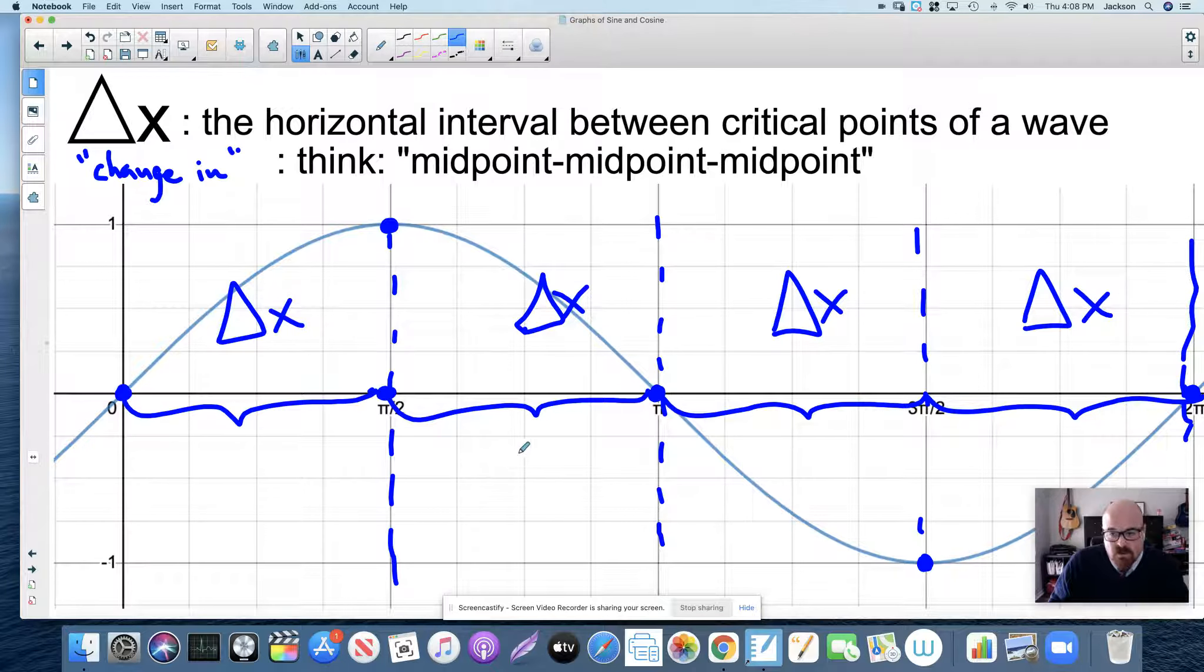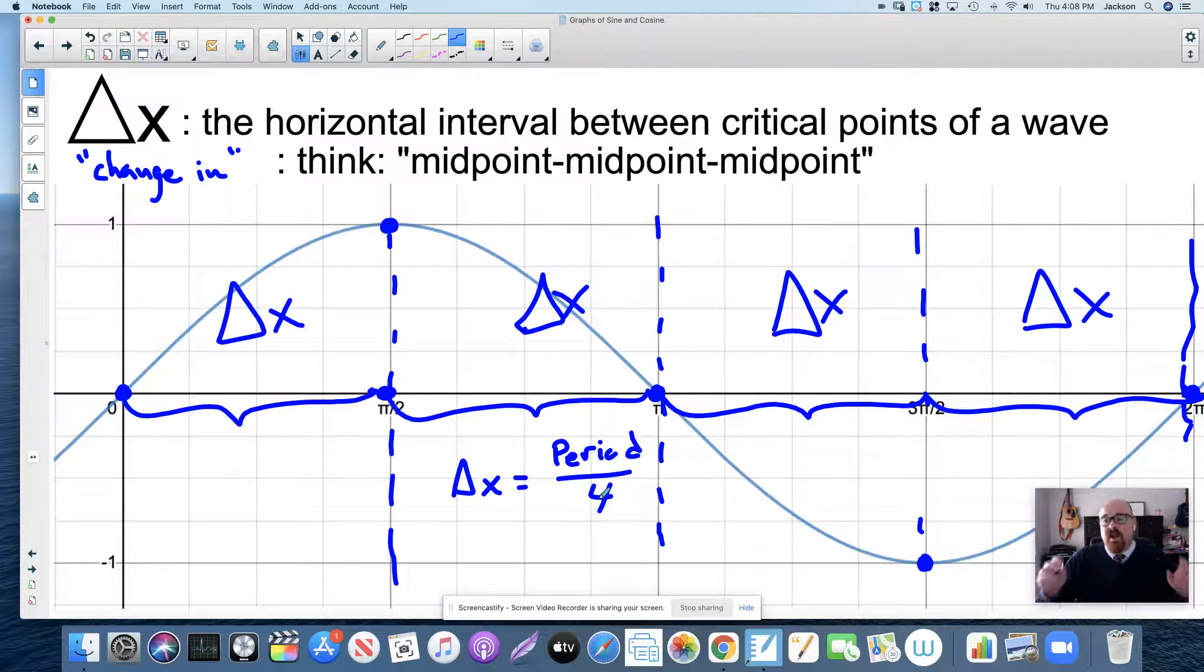Back in normal times when we're in the classroom and we may want to do this by hand, we used to say that the change in x is the period cut into four pieces. And that would help us graph these by hand, because as long as we knew where to start the graph and we know how far to go to get to the next point, then we could graph that next point.